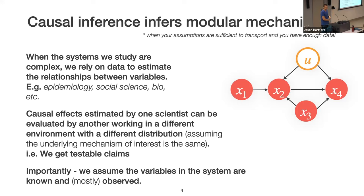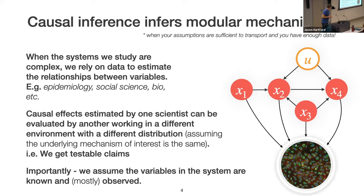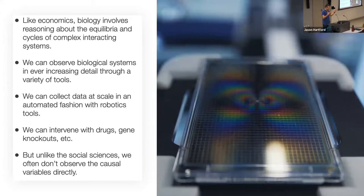All of this works if your assumptions hold and you have enough data, but it assumes the variables that play a role in the system are mostly observed. Today we're talking about a setting where instead of observing variables directly, we get unstructured proxies. For example, at Recursion they collect microscopy images of cells — the underlying variables that dictate cell states are hidden; all we see are pixels.